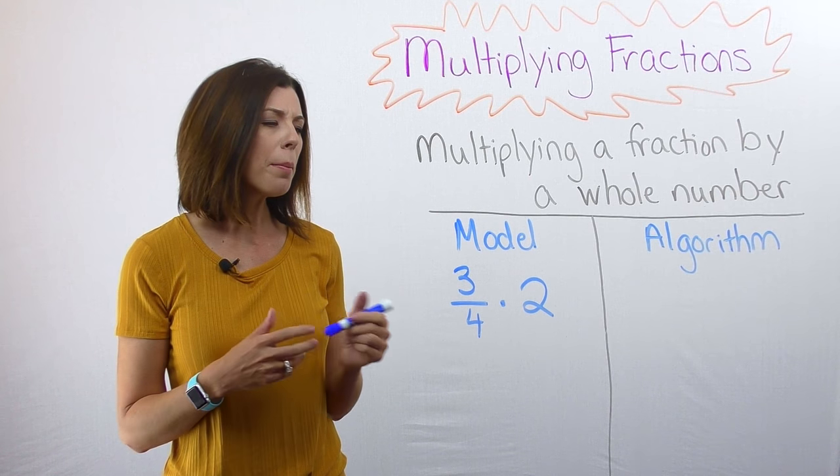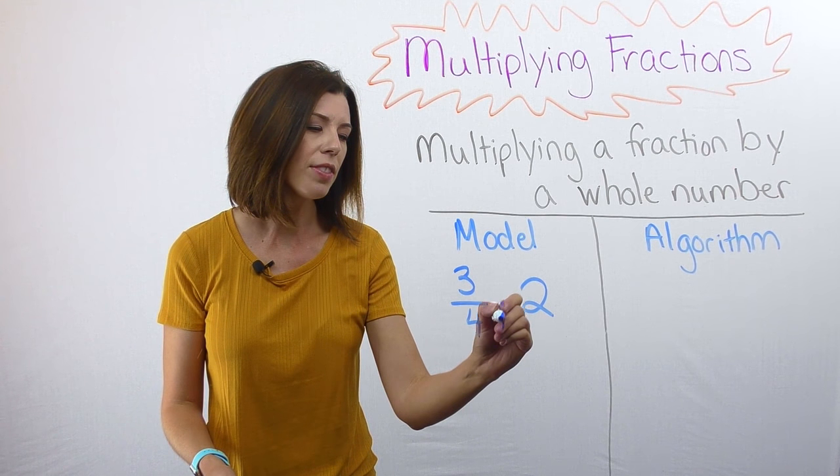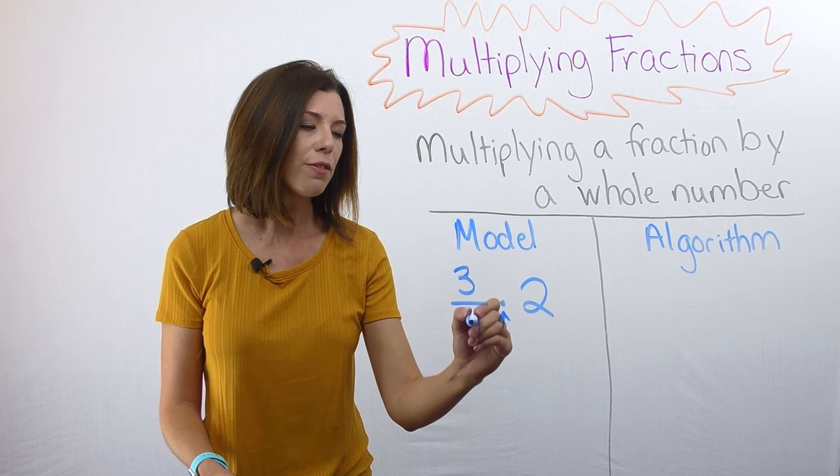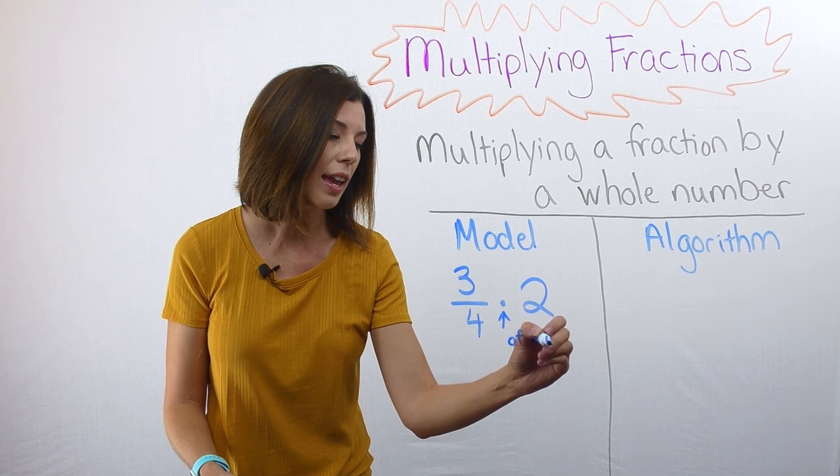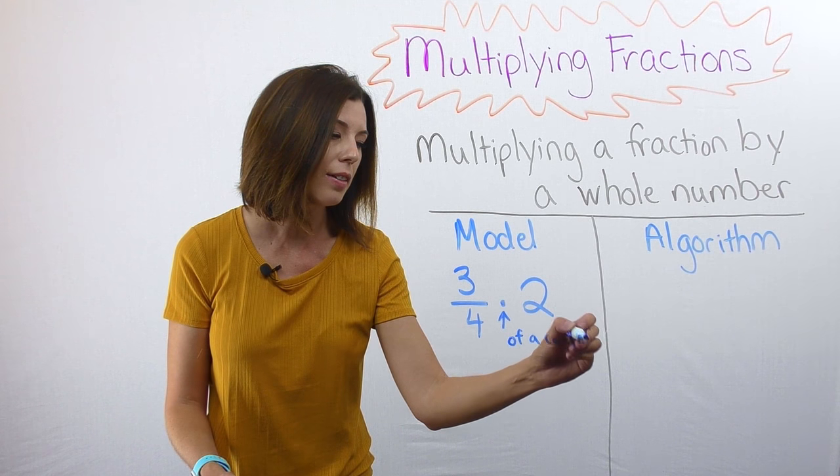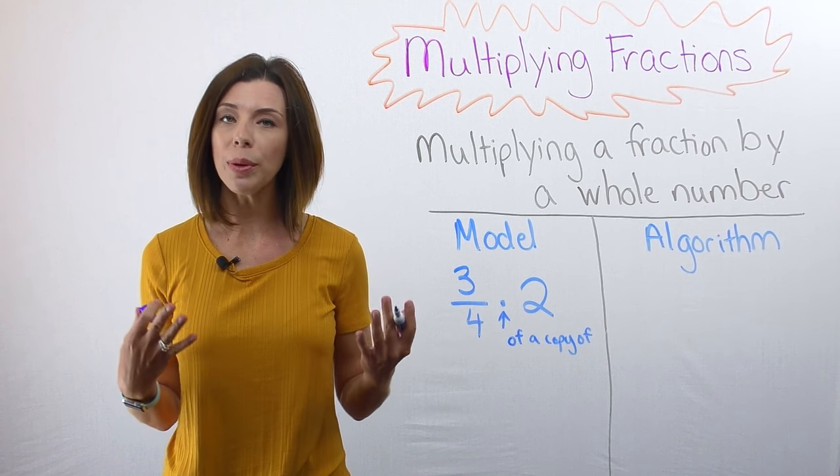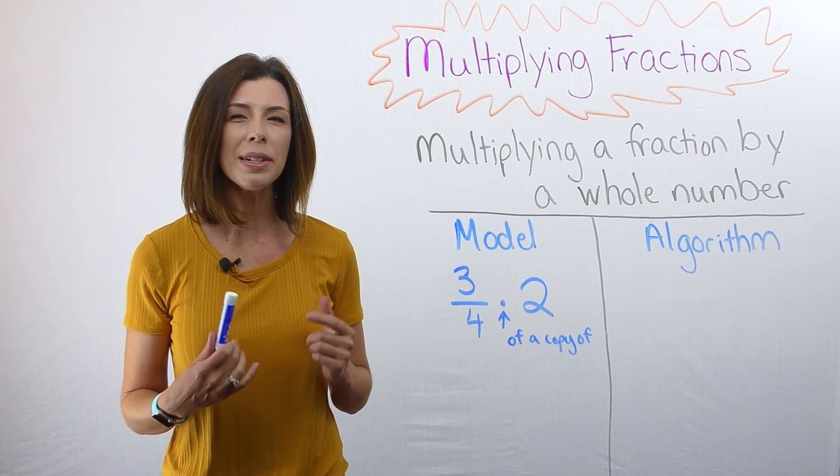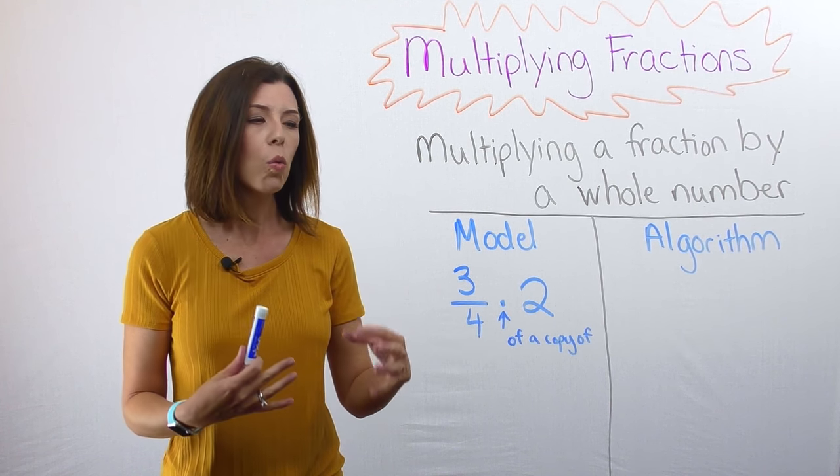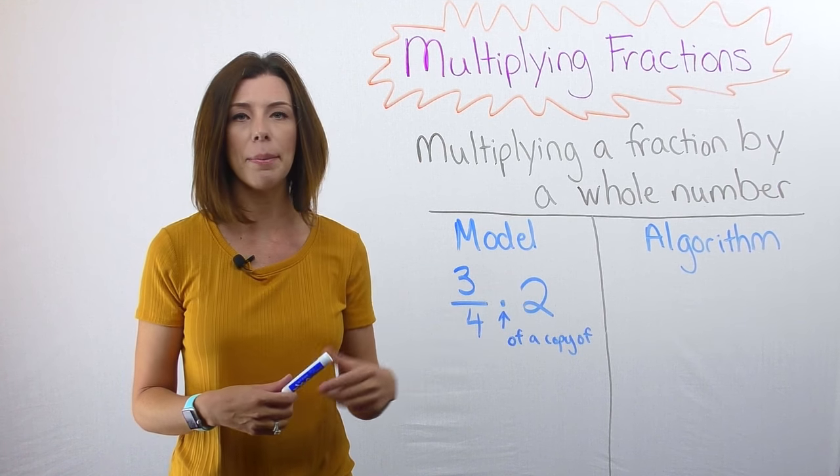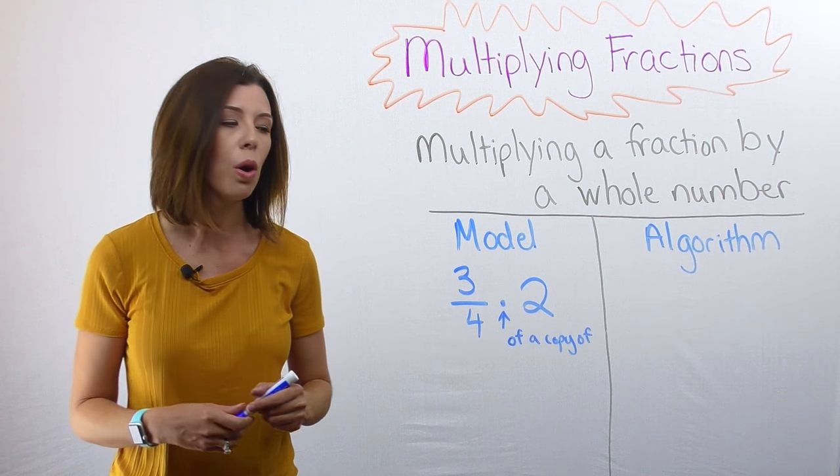Now really remember, in multiplication we can think of this as saying three-fourths of a copy. So of a copy of two. So I want three-fourths of a copy of two. So I'm going to start by drawing my whole number, because what I want three-fourths of is a copy of two. So first let's draw two wholes.